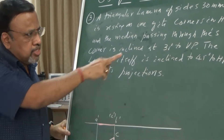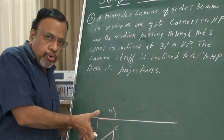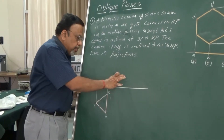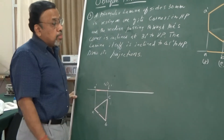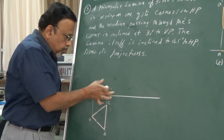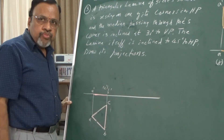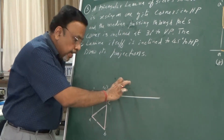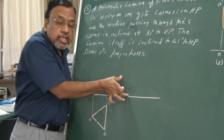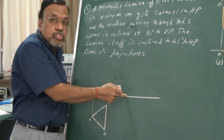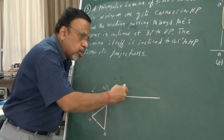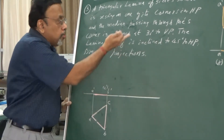Next step is to satisfy the surface inclination. The surface is inclined at 40 degrees to HP, so in the front view the line has to be inclined at 40 degrees. Now there are two ways to reorient this: if I tilt it so a corner rests on HP, that is correct. If I tilt it the other way, a side would rest on HP, which is wrong for this problem.